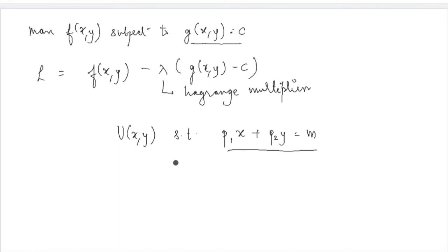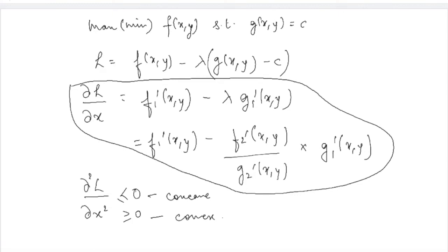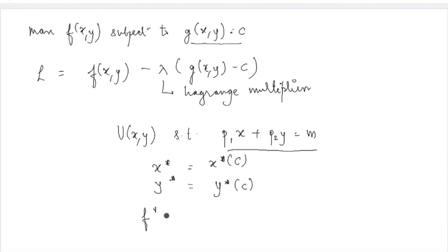When you get your answers at the optimum points, say x* and y*, you will notice that the values of x* and y* are actually dependent on the value of c. As you can recall from the example we solved, x* and y* depend on the value of m — the amount of income available — and m is nothing but c here. So in all such optimization problems, the optimum point will depend on c.